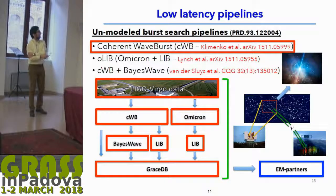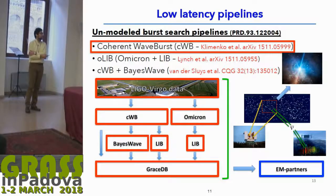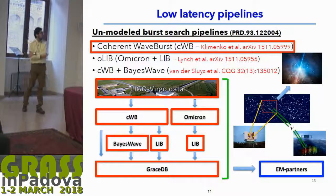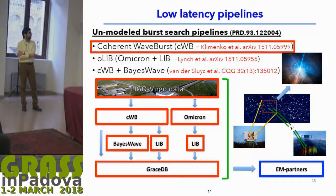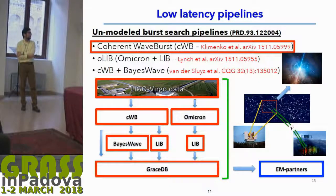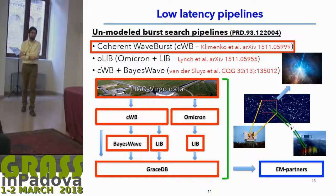This is a brief summary of how low-latency pipelines work in LIGO-Virgo. Basically, we have three low-latency pipelines: Coherent WaveBurst (CWB), which I've highlighted because it's the one we worked with; oLIB; and BayesWave, which is a Bayesian follow-up. The data will be processed by CWB and Omicron, and the triggers produced will be followed up by BayesWave in LIGO-Virgo and later stored in the international LIGO-Virgo database, ready to be sent to electromagnetic partners for follow-up.